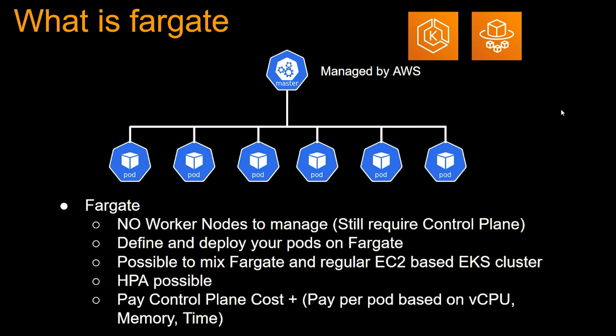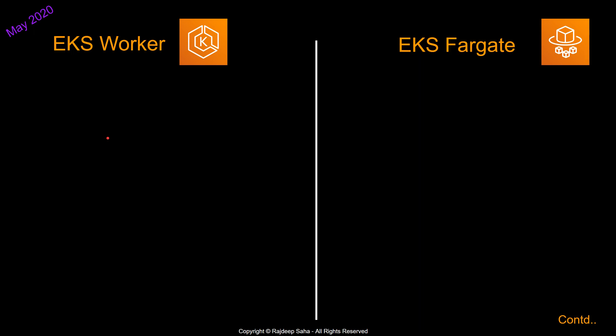You're probably thinking this is very similar to Lambda in the serverless ecosystem — and it is. Fargate is also part of the serverless ecosystem, so this is part container, part serverless. Now let's take a look at a comparison chart between a regular EKS cluster running EC2 worker nodes versus an EKS cluster with EKS Fargate and no worker nodes.